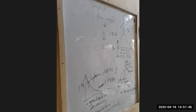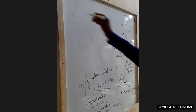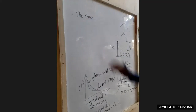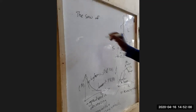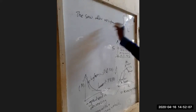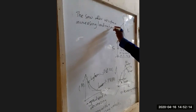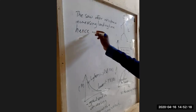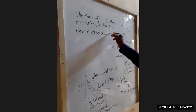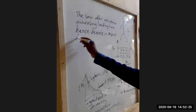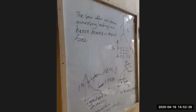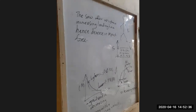The sawdust offers resistance, increasing landing time, hence a decrease in impact force. That is what was expected. It is just about impact force, which we know is high when the time taken to produce it is small.